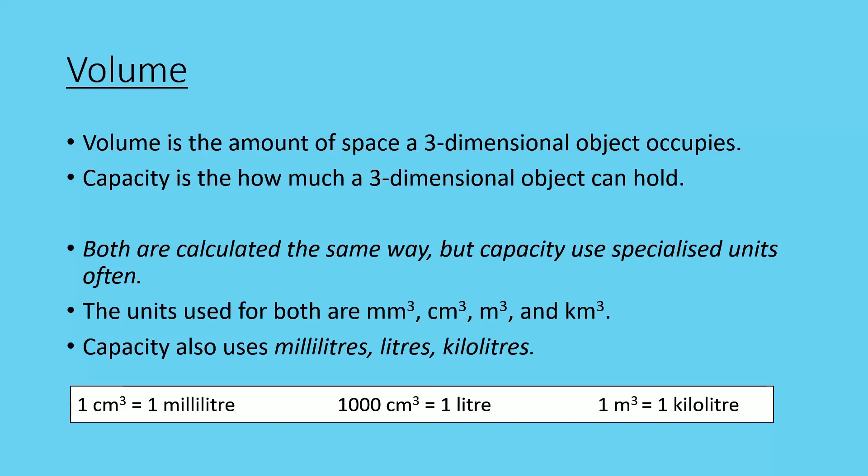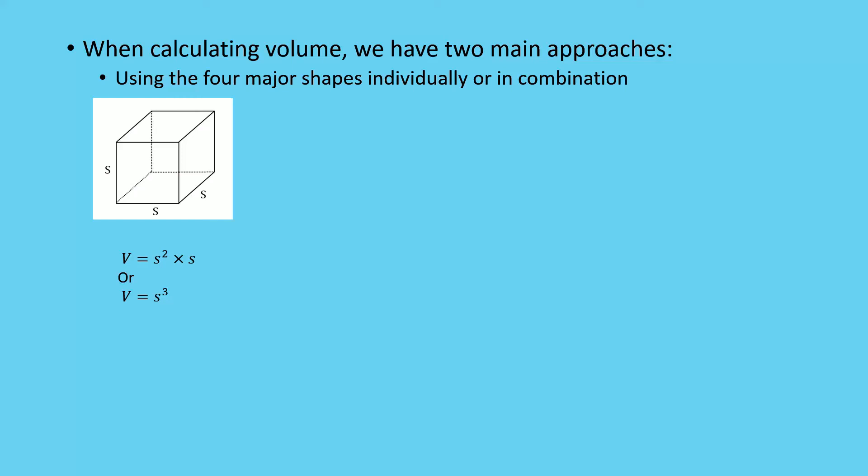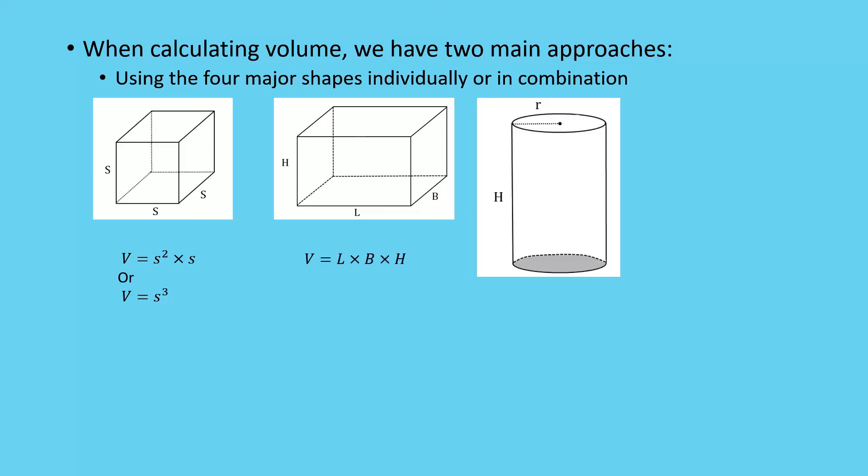we have two main approaches: we can use the four major shapes individually or in combination. So what do I mean by the four major shapes? Well, we have a cube, which we know the volume is just the sides cubed - side times side times side, or area of the base (side squared) times side. You've got your rectangular prism, which is length times breadth times height. You've got your cylinder, which is going to be your area of your base, so πr² times height. And our triangular prism, which is just the area of the base times the height, so half base times height times height again, which is the shaded in part. Very important, quickly about the cylinder: if they give you